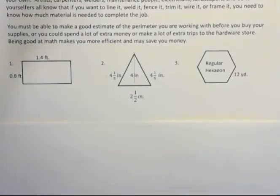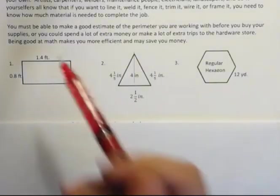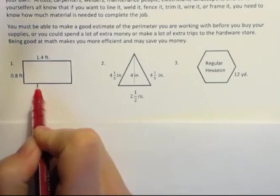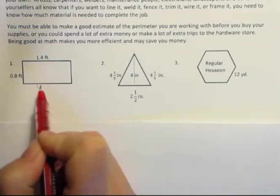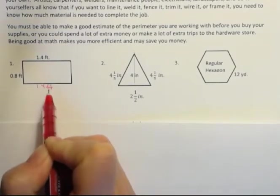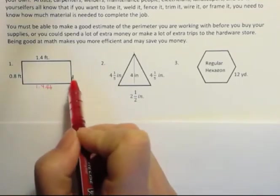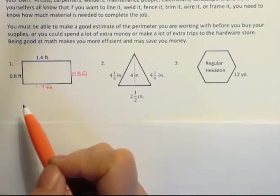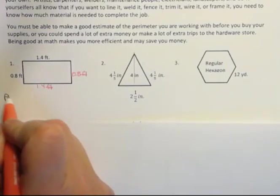So let's look at these shapes below. The first one is a rectangle, and what I know about rectangles is that opposite sides are congruent or have the same length. So I know that this one is also 1.4 feet and across from that is also 0.8 feet. That's important because when I find the perimeter of something I want to find all four sides, not just two that are given.